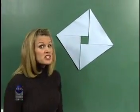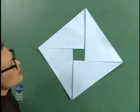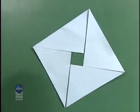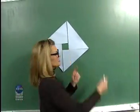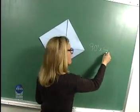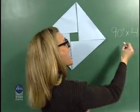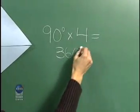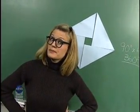Let's do the math. Knowing what Pythagoras discovered about the right angle, can you calculate how many degrees are in this square? If you multiply 90 degrees times four — you're right! This square has 360 degrees. What other shape has 360 degrees? A circle.